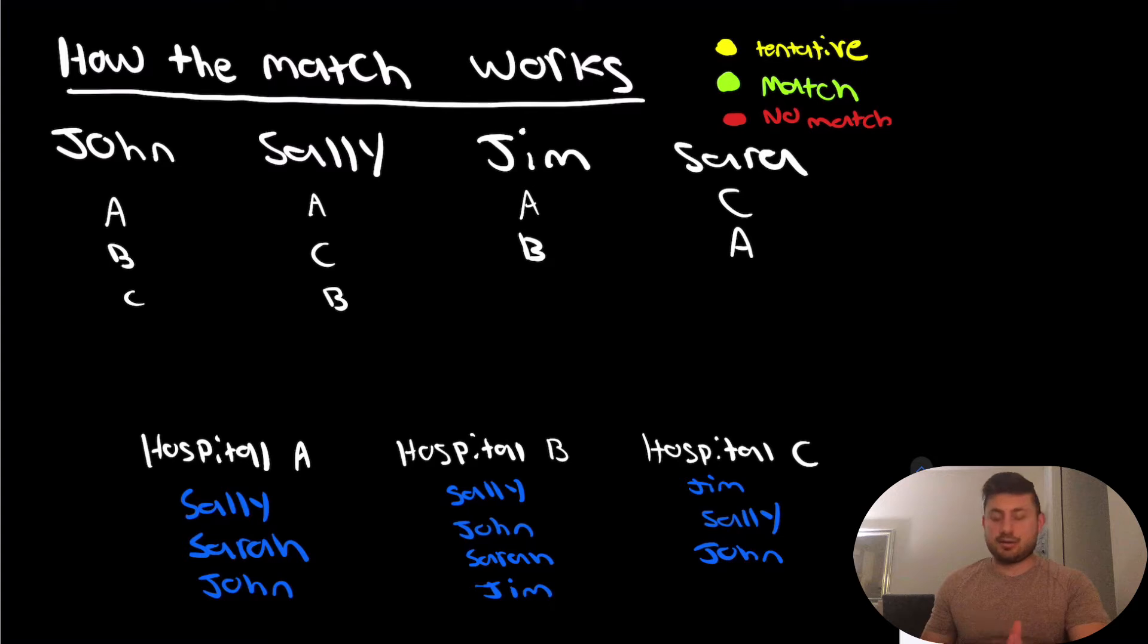So the way the match algorithm works is it's actually an applicant-favoring algorithm. What that means is the goal is to try to match the applicant first at their most desired program. So a few pointers when you're making your rank list: applicants should really try to list as many different schools in their rank list as possible. And actually, programs should do the same if they're trying to fill all of their spots.